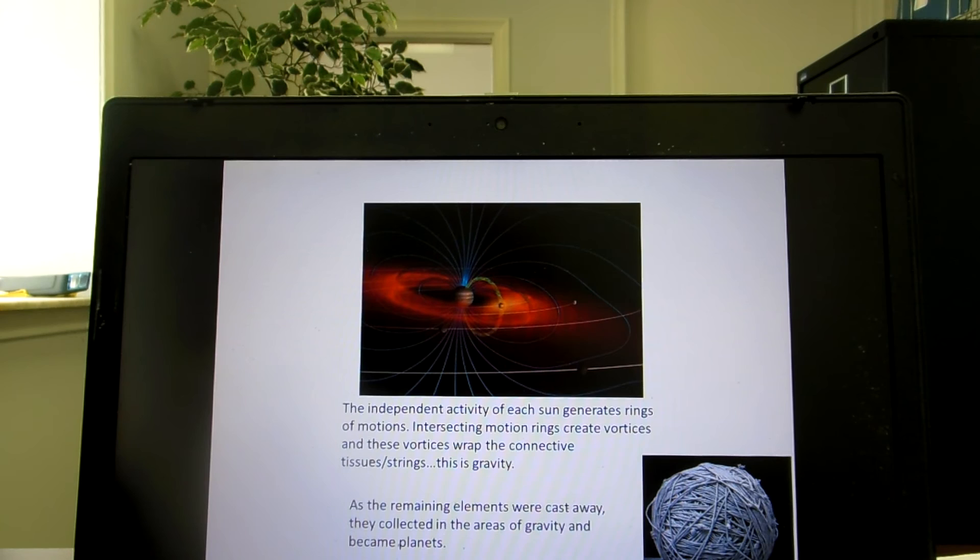The independent activity of each sun generates rings of motion. The intersecting motion rings create vortices, and these vortices wrap the connective tissue/strings, and this is what we know as gravity.